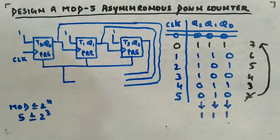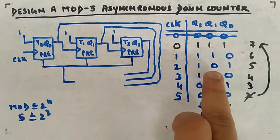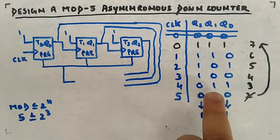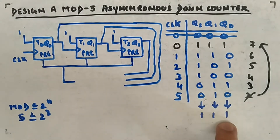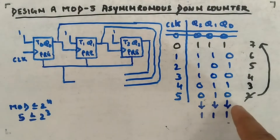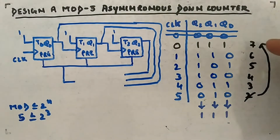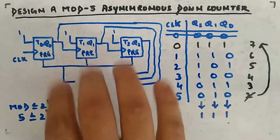At the first clock cycle it becomes 6 — it's a down counter — then 5, 4, 3, 2. As soon as it reaches 2, it goes back to initial state 1,1,1, because it's mod-5: 1,2,3,4,5 — a total of 5 states. As soon as the 6th state comes, which is your value 2, it will go back to 1,1,1.